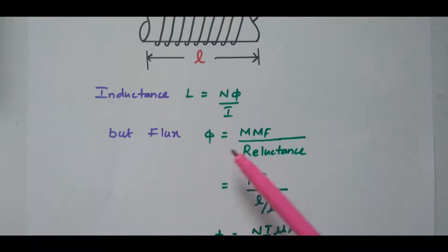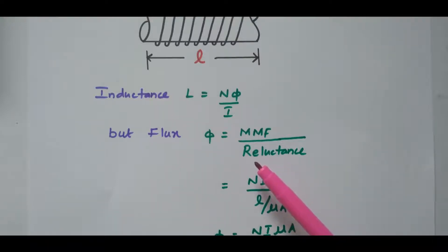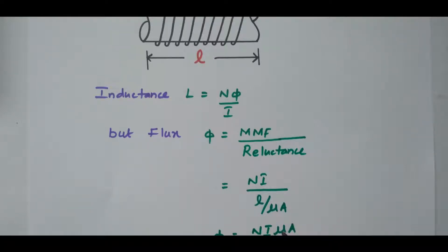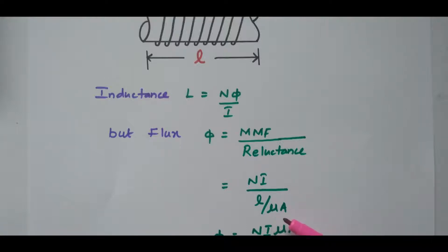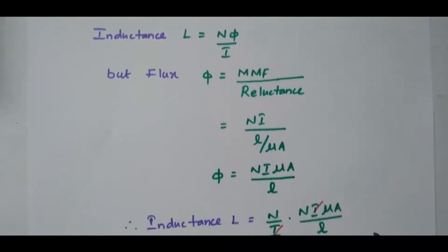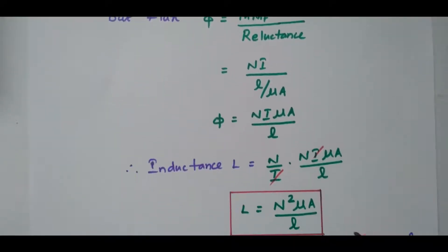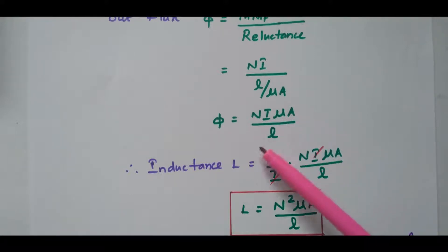The flux Φ can be written as MMF divided by reluctance. Reluctance equals MMF divided by flux, so flux equals MMF by reluctance. This MMF is nothing but N into i — number of turns into current. The reluctance is very similar to resistance; it is l by μA, just as resistance is ρl by A. Here we have μ in place of resistivity, so μA goes to the numerator, giving flux Φ equal to N i μ A divided by l.